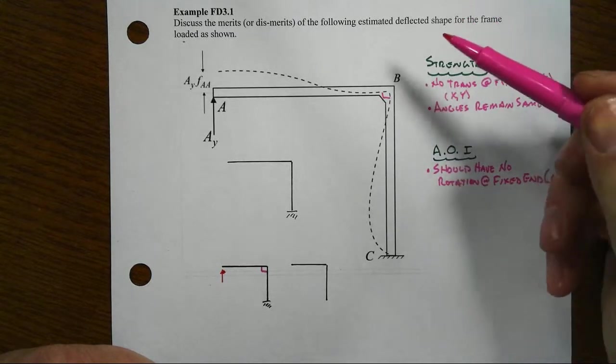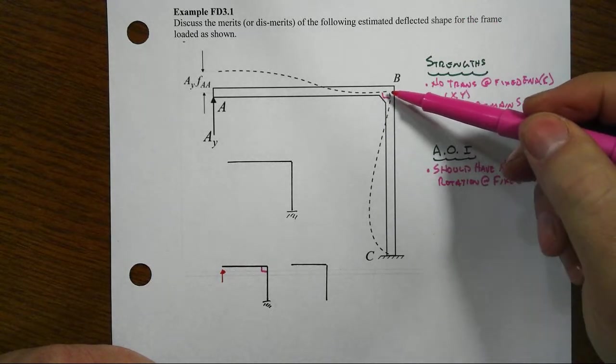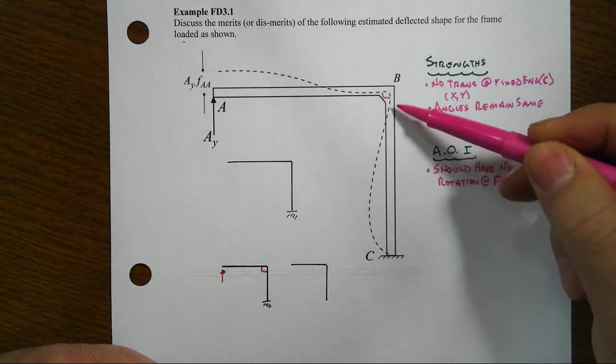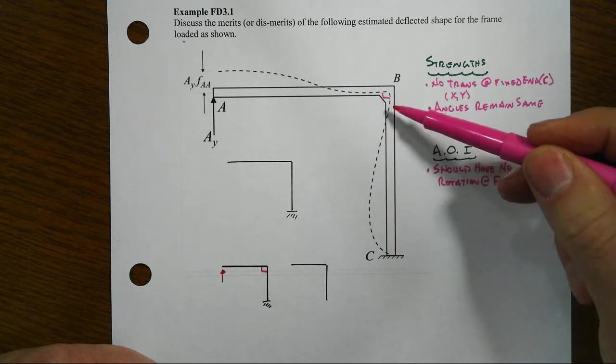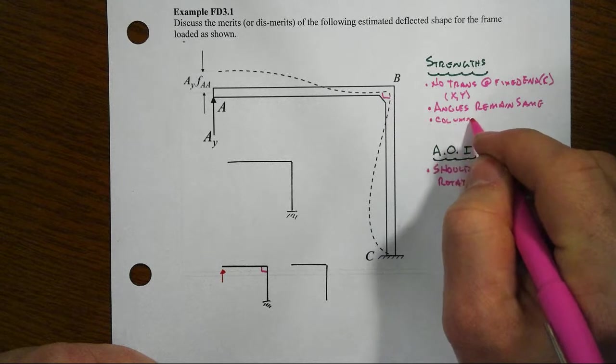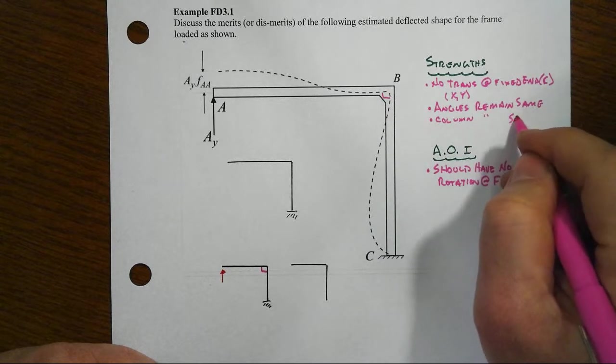That would mean that angles remain the same as they were before loading, so that's good. And if we look closely here, it looks to me like joint B does not move up and down. If it did move up and down, it would imply shortening of the column, so the column remains same length.